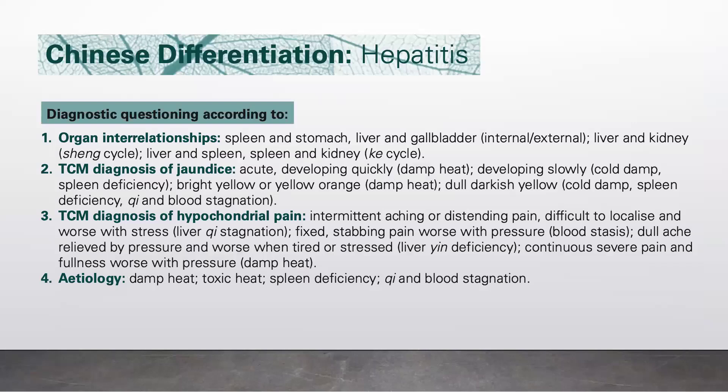The TCM diagnosis of hypochondrial pain: if there's intermittent aching or distending pain, difficult to localize and worse with stress, it is due to liver qi stagnation. If it's fixed, stabbing pain or worse with pressure, it means blood stasis. If it's a dull ache relieved with pressure and worse when tired or stressed, it's liver-yin deficiency. If it's continuous severe pain and fullness worse with pressure, it's due to damp heat.